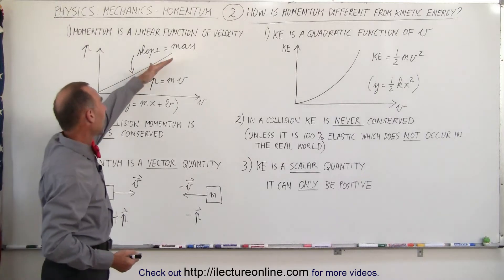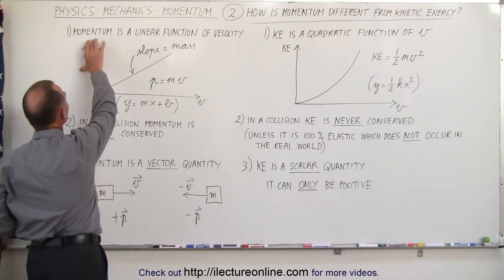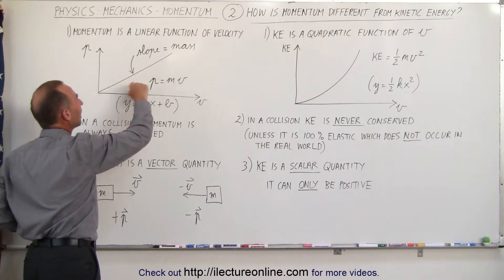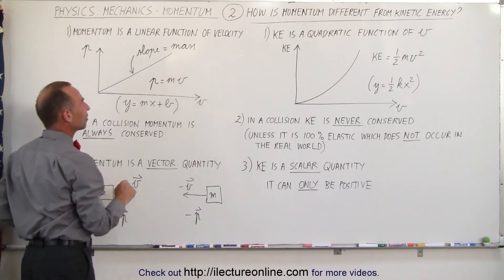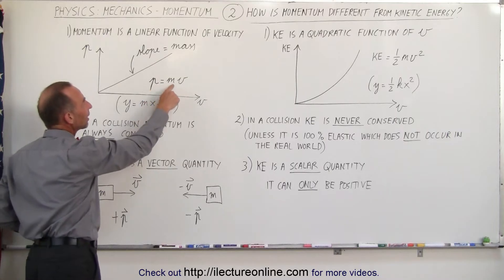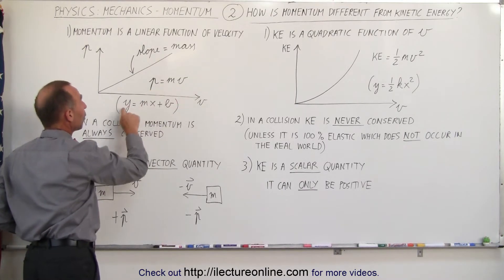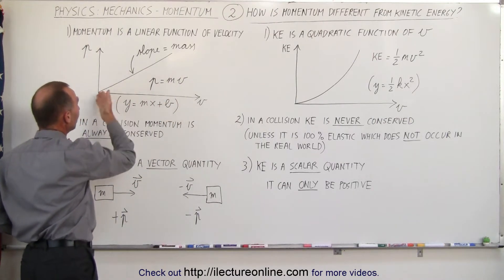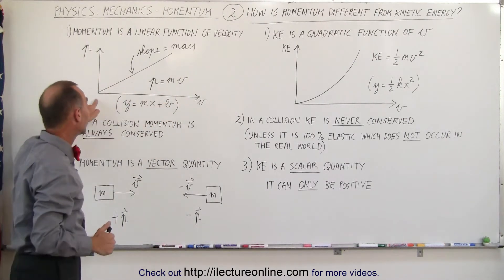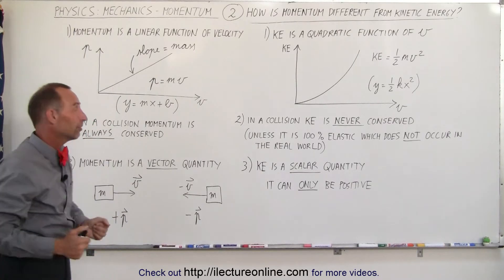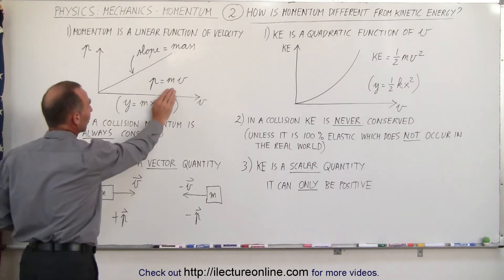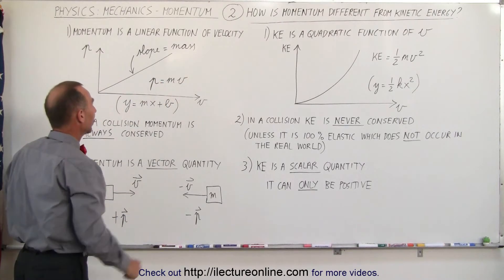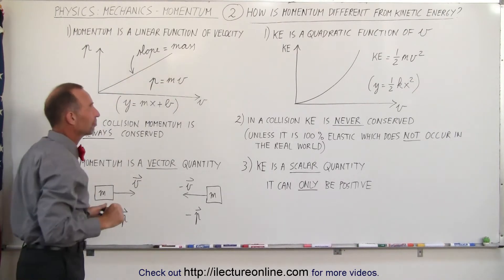So you can see that if you draw a graph where we have momentum versus velocity here, that you have a straight line, and that the slope of that line equals the mass of the object. p equals m times v looks a whole lot like y equals mx plus b. In this case we don't have a y-intercept, or a p-intercept, because if the velocity is zero you don't have any linear momentum. So if this goes away, you can see that the two equations are extremely similar, and the mass is the slope of that graph.